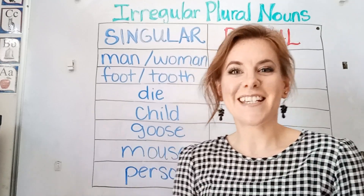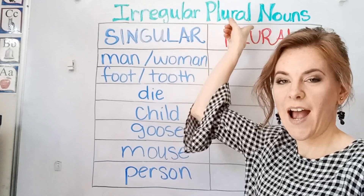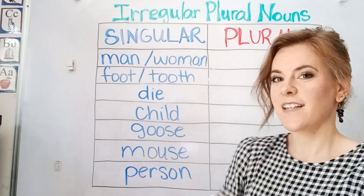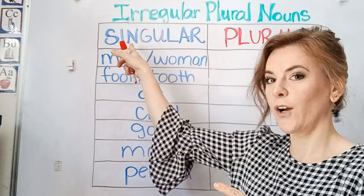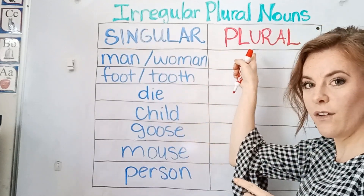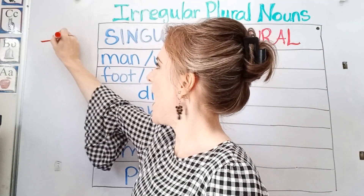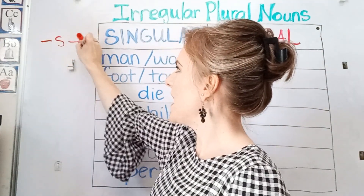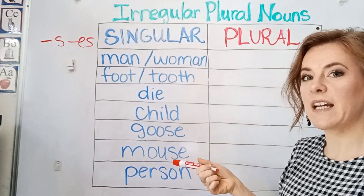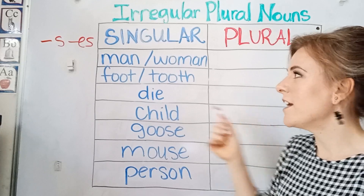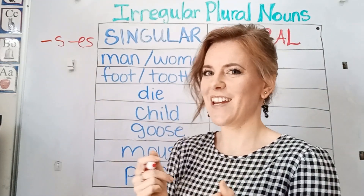Hello students. Today we are going to talk about irregular plural nouns. These are nouns that when you change them from singular to plural, you change the whole word. You do not just add an S or an ES. These nouns are irregular because when you make them plural, you're not adding S or ES — you're changing it even more.